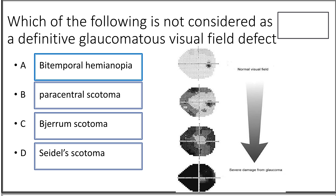Third question: which of the following is not considered a definitive glaucomatous visual field defect? Option A bitemporal hemianopia, option B paracentral scotoma, option C arcuate scotoma, option D Seidel scotoma. The answer is option A, bitemporal hemianopia. The other three types of scotoma are observed in glaucomatous damage of varying optic nerve changes, whereas bitemporal hemianopia is classic of a neurological defect, especially of the chiasmal region.